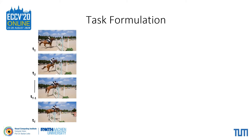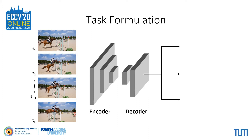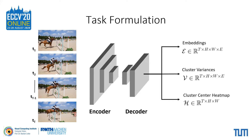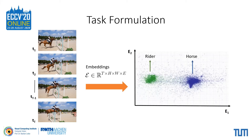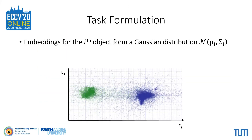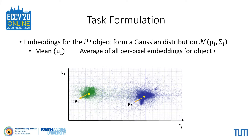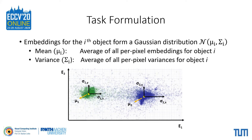Given a video clip, our 3D convolutional network produces three outputs for every pixel: an E-dimensional embedding, a variance for each embedding dimension, and a cluster center heatmap. If we consider two-dimensional embeddings, then for a given video clip we should get a cluster for the horse object and another for the rider object. Mathematically, we define object clusters as Gaussian distributions. The mean of this distribution is the average of the per-pixel embeddings belonging to that object, and likewise, the variance is the average of the per-pixel variances.